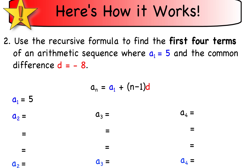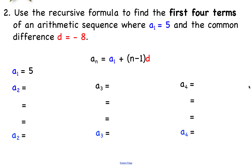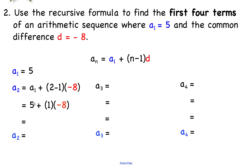Here's another example: use the recursive formula to find the first four terms of an arithmetic sequence where a sub 1 is 5 and the common difference is negative 8. The first term is 5. For the second term, we use the formula: a sub 2 equals a sub 1 plus 2 minus 1 times d, where d is negative 8. Since 2 minus 1 is 1, we get 5 plus negative 8, which gives us negative 3.